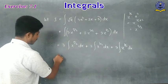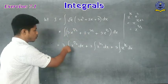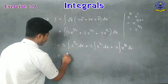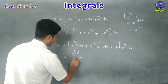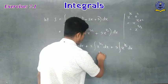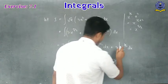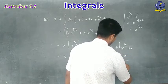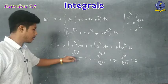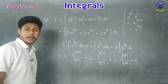Each term is of the form ∫xⁿ dx. Applying the formula: 3 × x^(5/2+1)/(5/2+1) + 2 × x^(3/2+1)/(3/2+1) + 3 × x^(1/2+1)/(1/2+1) + C. The three integrating constants combine into one constant C.